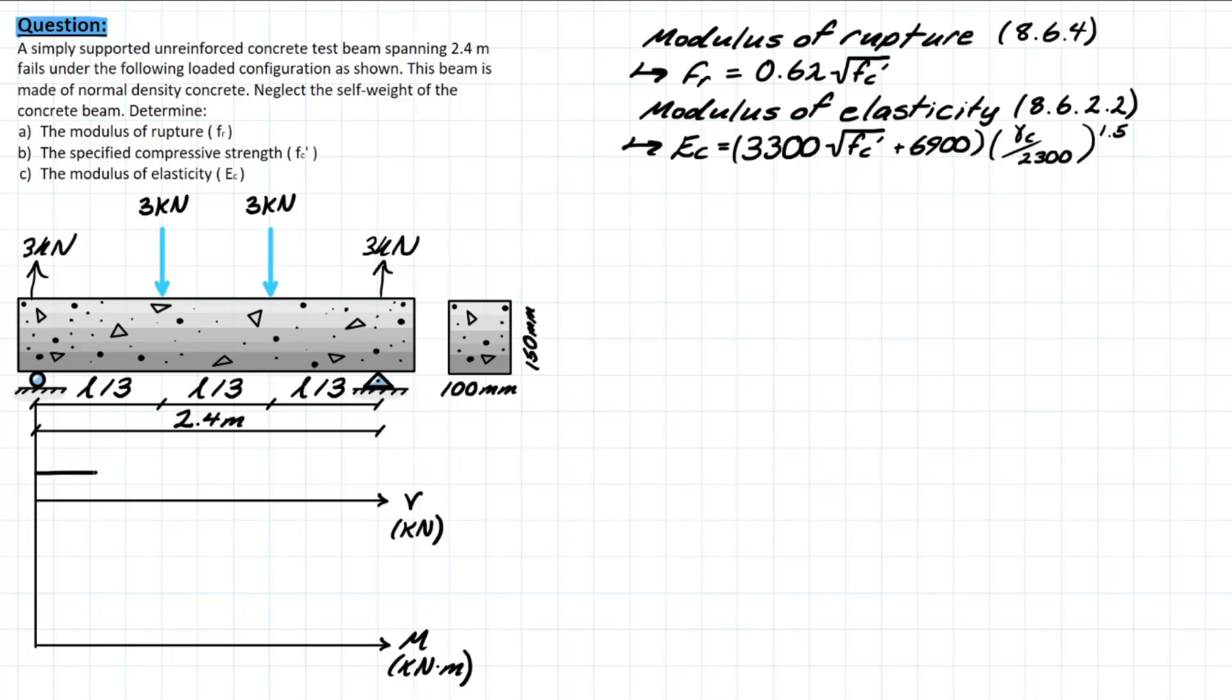Our shear diagram will be super simple. We have a jump up 3 kilonewtons that's going to come all the way across to where this 3 kilonewtons is coming back down. That's going to bring us back to zero, once again another jump downwards bringing us back to our support which jumps back up, bringing everything to equilibrium. So this will be 3 and this will be negative 3, this is all in kilonewtons.